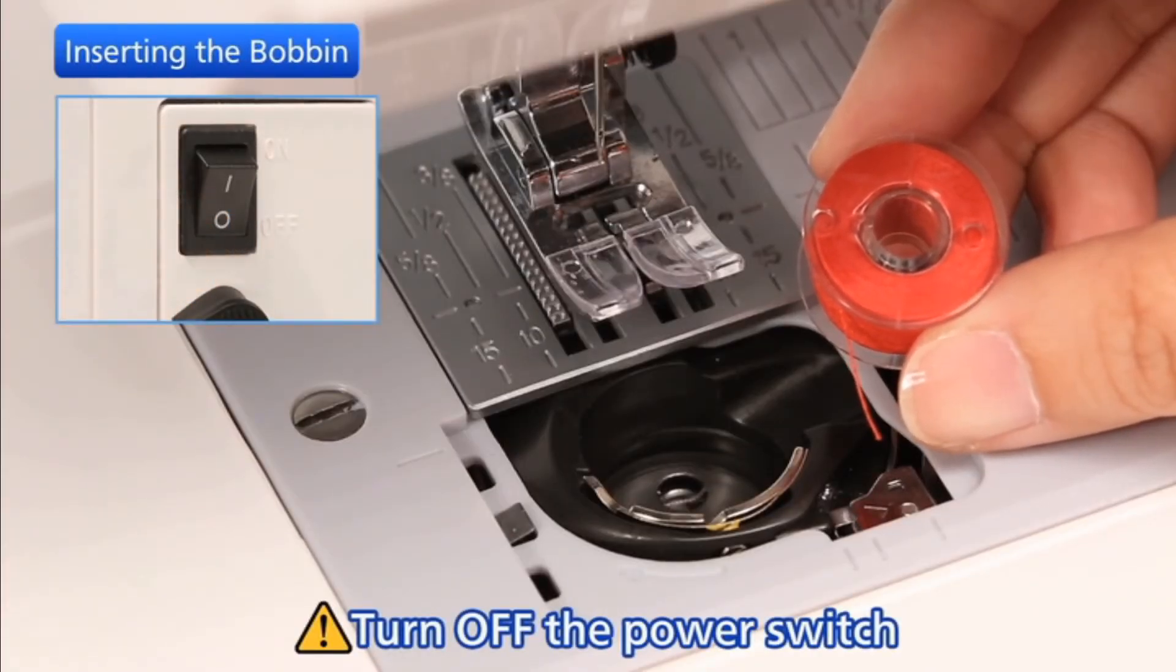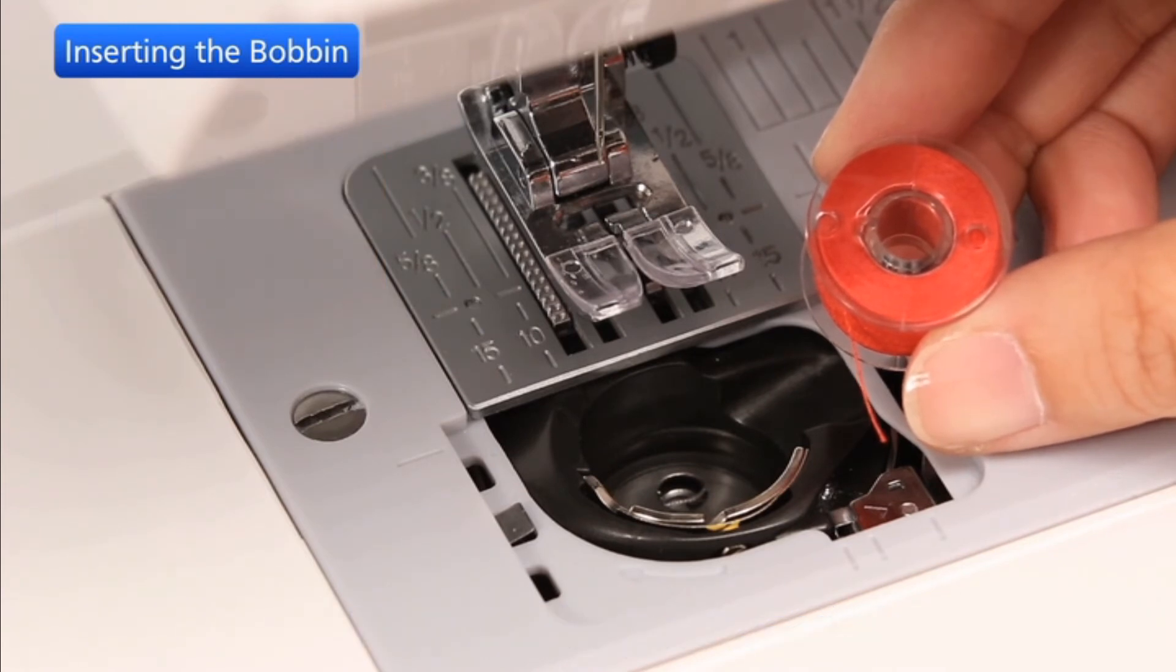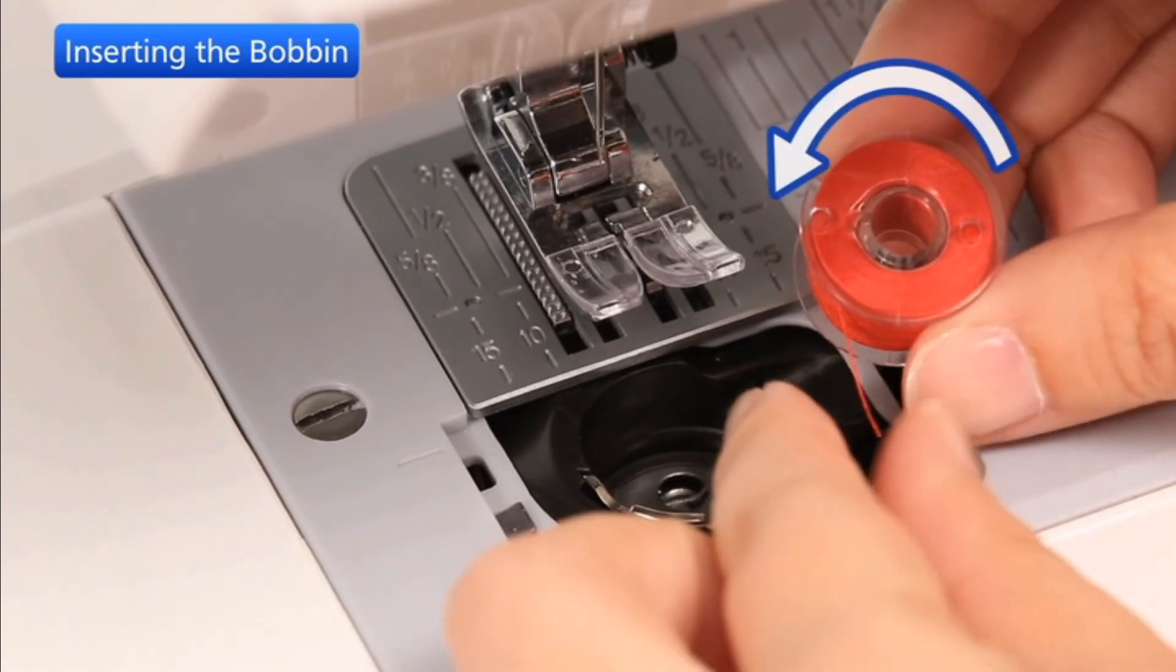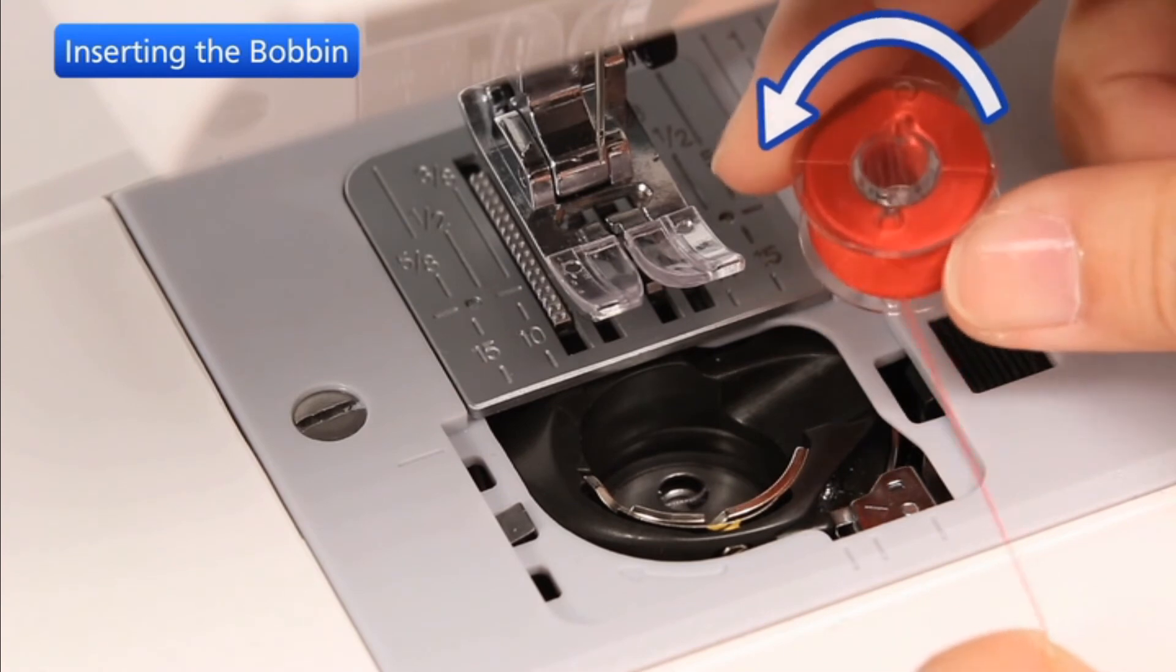Turn off the power switch before inserting the bobbin and threading the bobbin holder. Place a bobbin in the bobbin holder with the thread running off counter-clockwise.